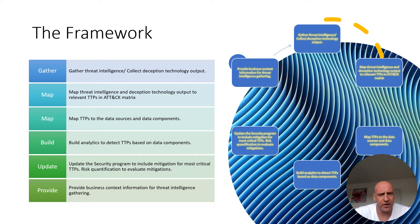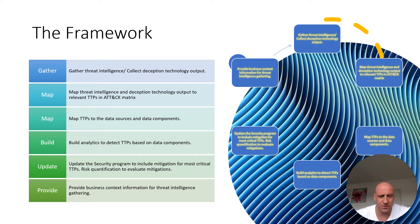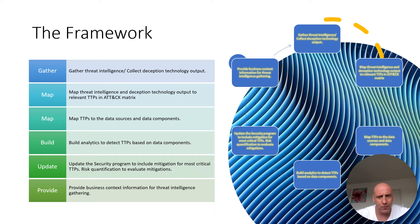Once we gather threat intelligence and collect deception technology output, we map those threat actors into the relevant tactics, techniques, and procedures against the ATT&CK matrix, creating a heat map. In the next series, I'll show how to build the heat map — for example, selecting seven threat actor groups, creating seven individual layers, then combining them into one unified layer. Techniques shared across multiple groups appear with higher priority. We also map those TTPs to data sources and data components, then build analytics to detect them.